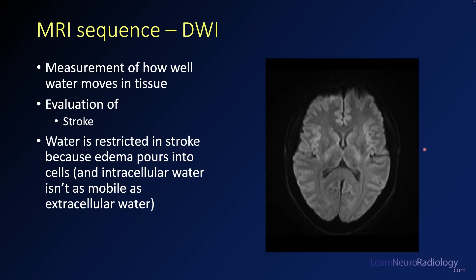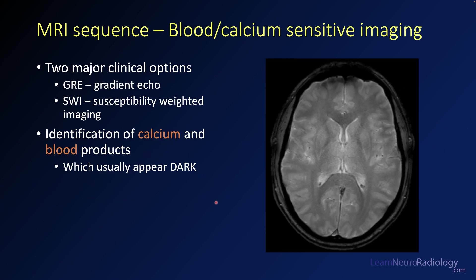Diffusion weighted imaging (DWI) measures how well water moves through tissue. We commonly use it for evaluation of stroke — in stroke, water is restricted because the sodium-potassium ATPases in the cell membranes fail, causing water to pour into the cells. Intracellular water doesn't move as well as extracellular water, so when water movement is restricted it appears bright on DWI. Many MRI protocols include blood- or calcium-sensitive imaging, which may be a gradient echo sequence or susceptibility-weighted imaging, depending on the scanner.